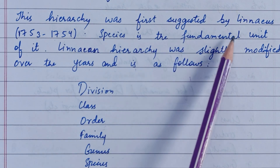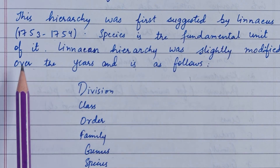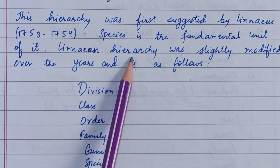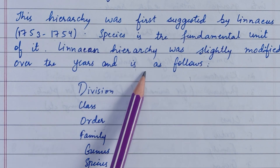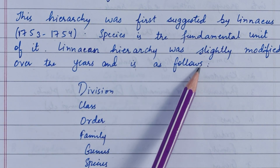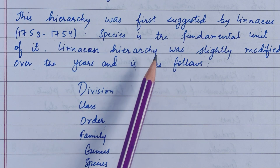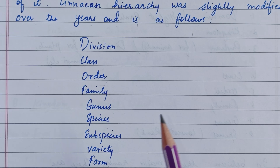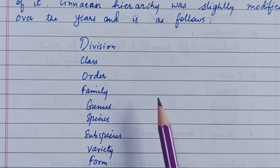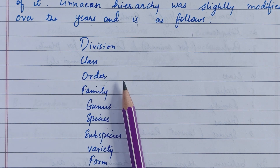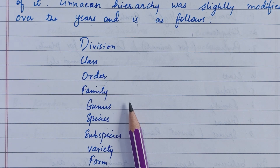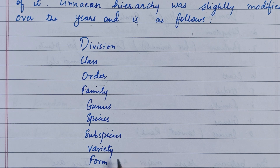Species is the fundamental unit of taxonomic hierarchy. The Linnaean hierarchy was slightly modified over the years and is as follows: Division, Class, Order, Family, Genus, Species, Subspecies, Variety, and Form.